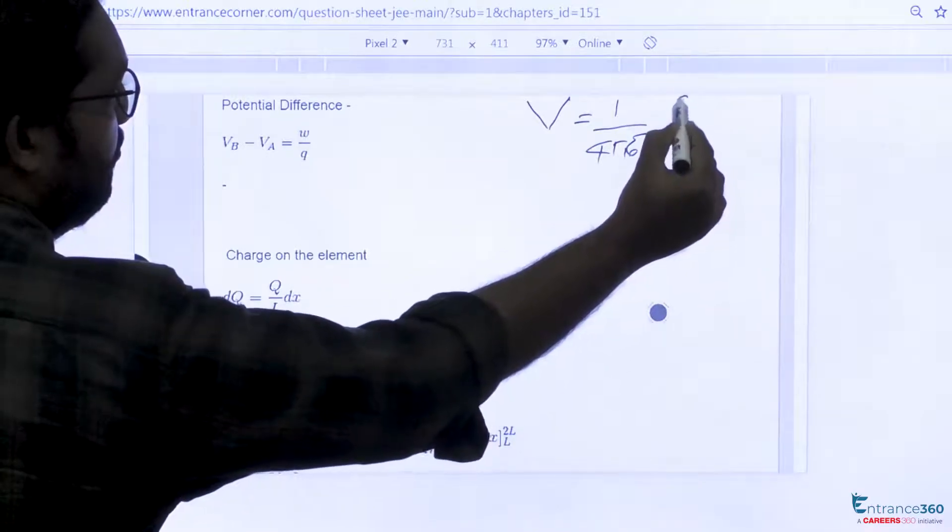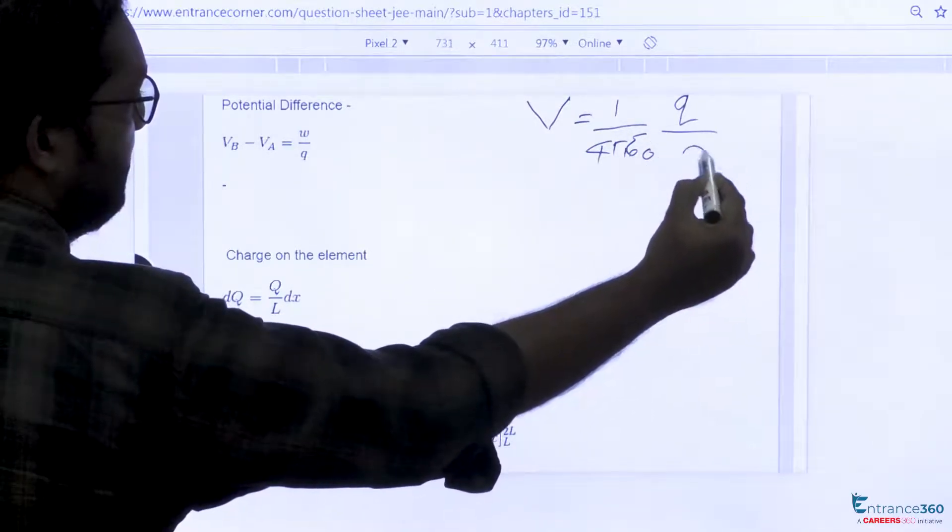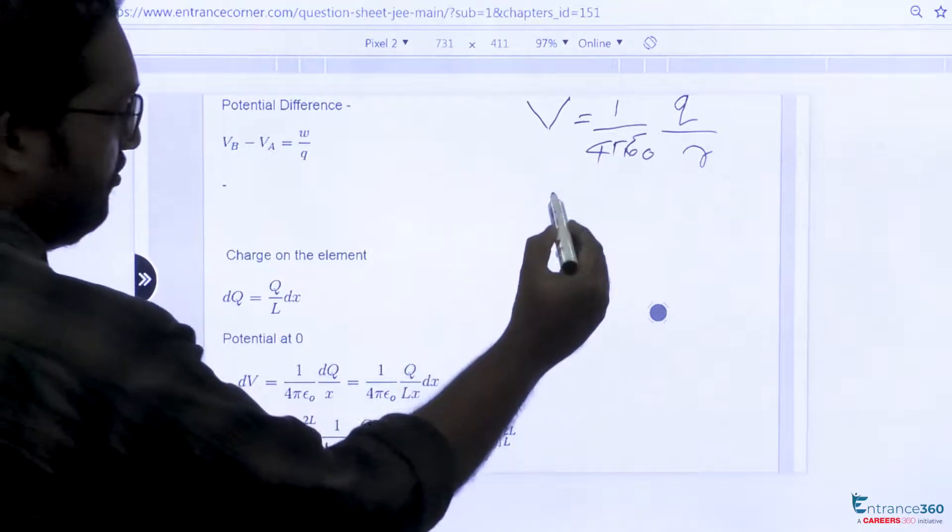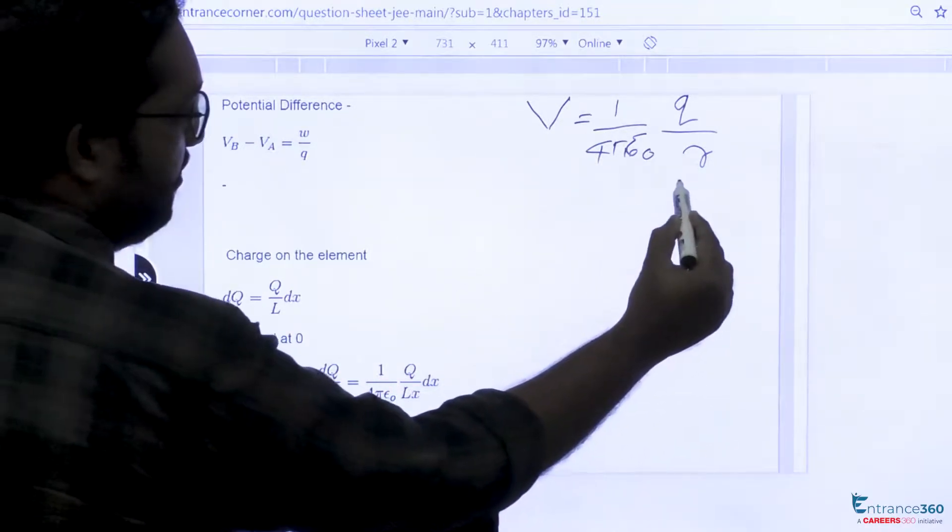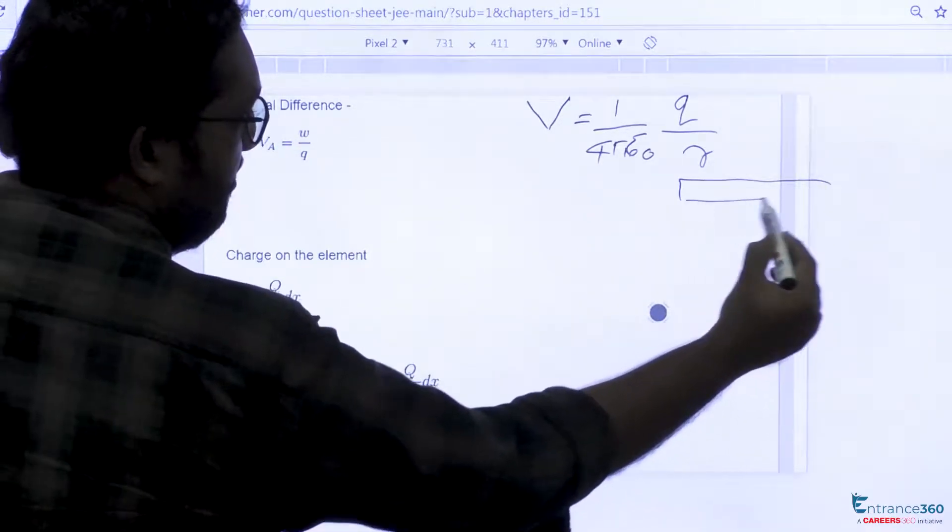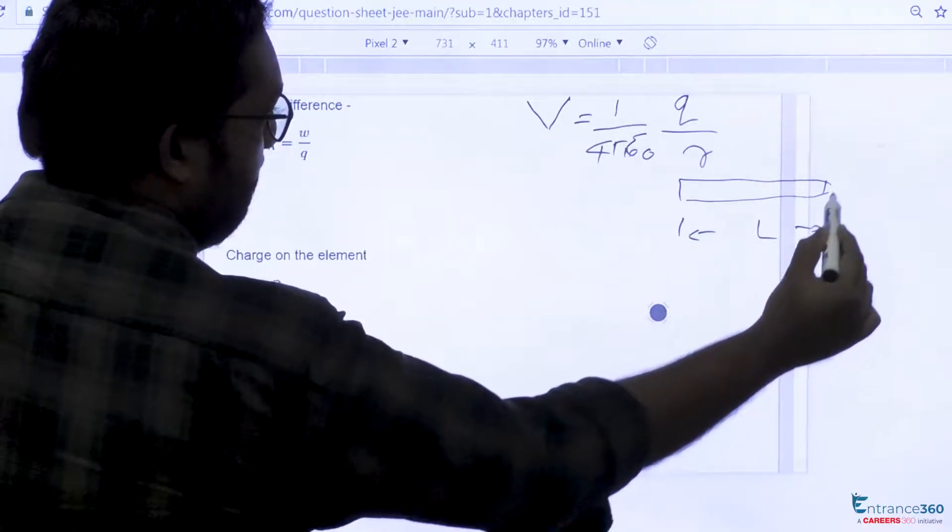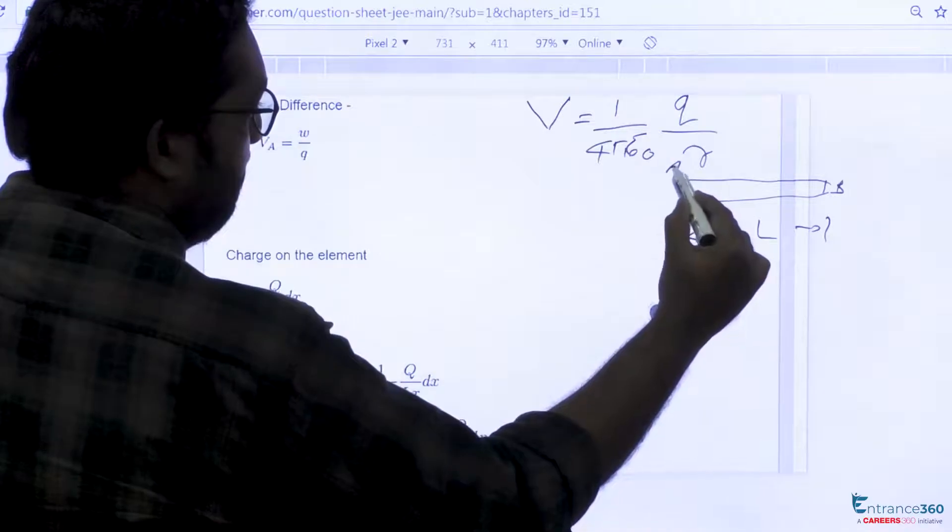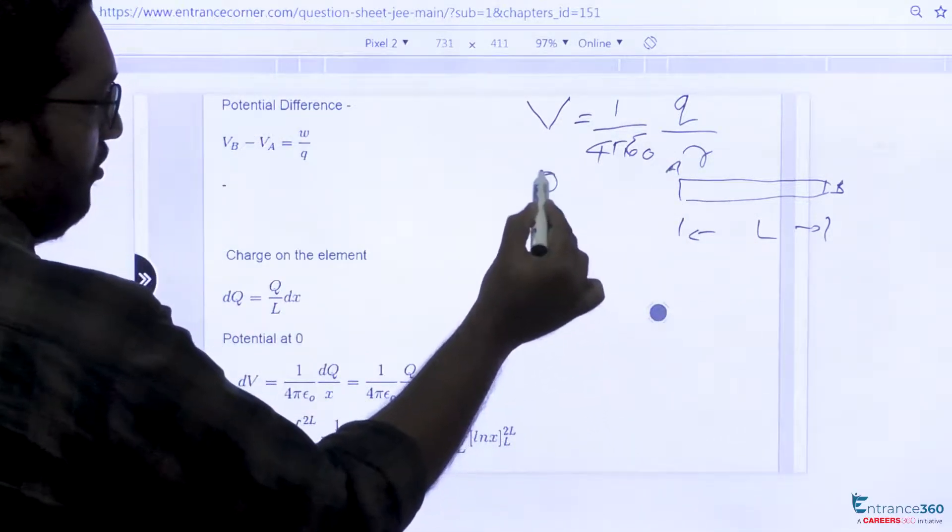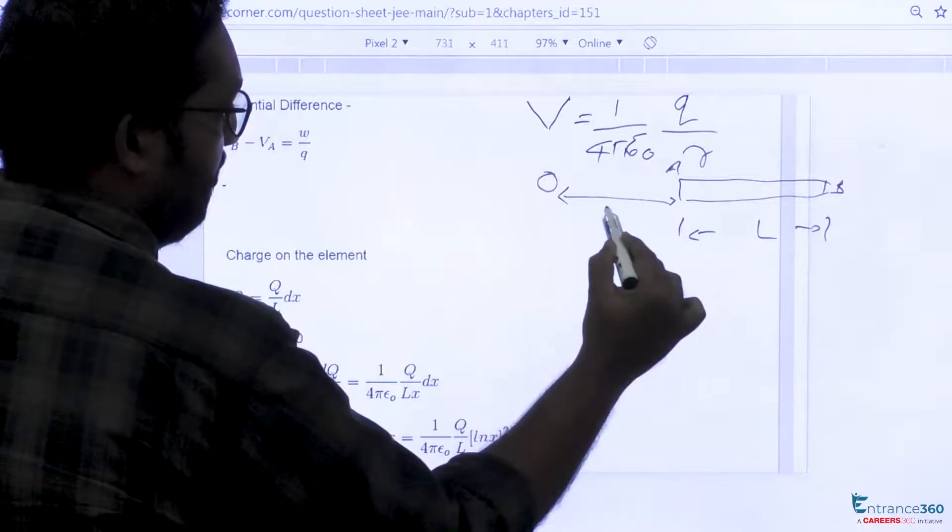Now let's see our question. We have a rod AB of length L. We have a point O which is at a distance L from the rod.